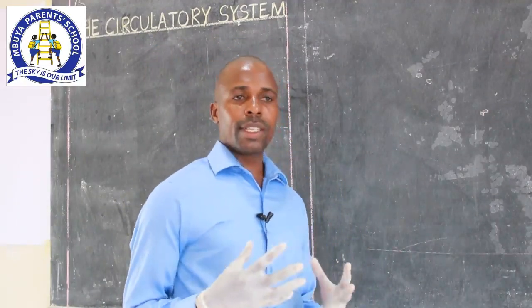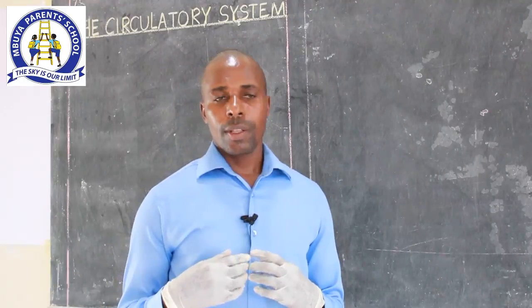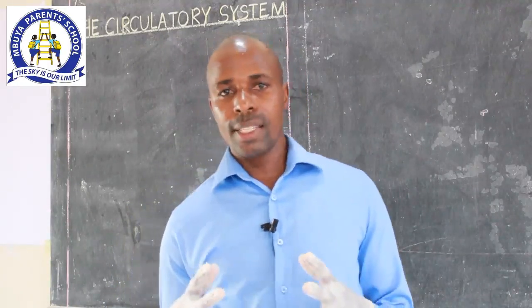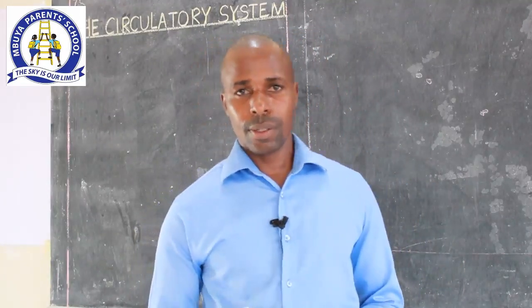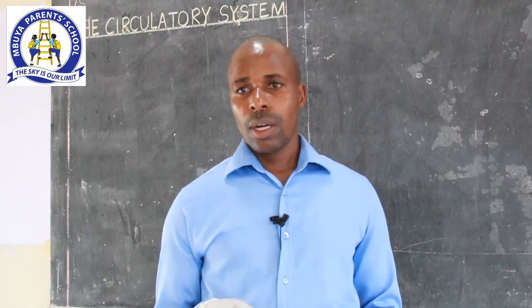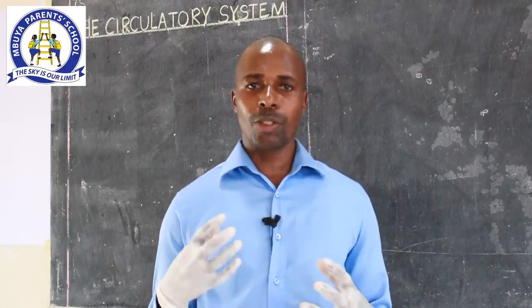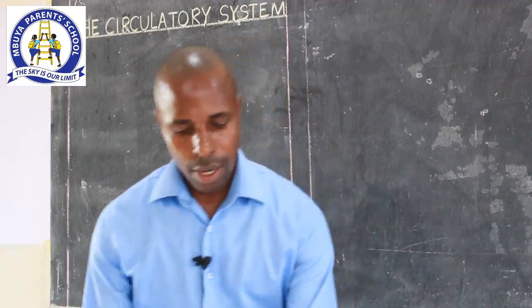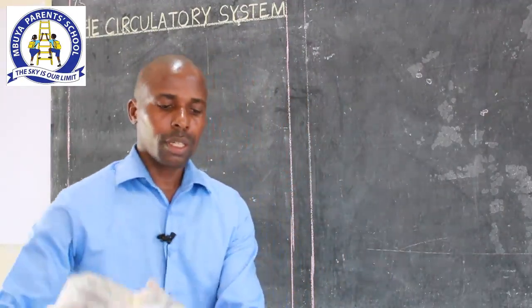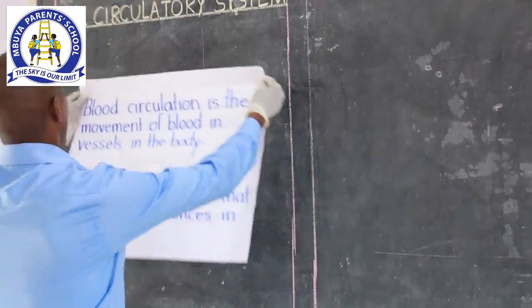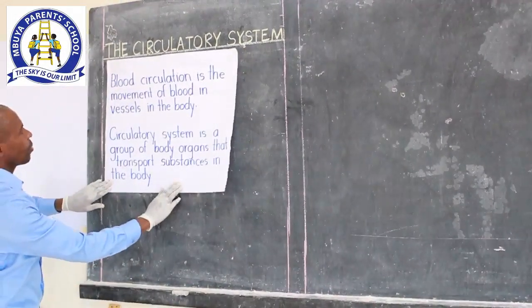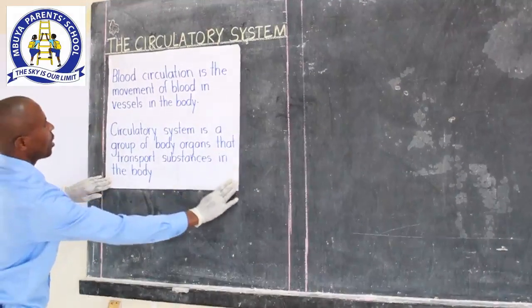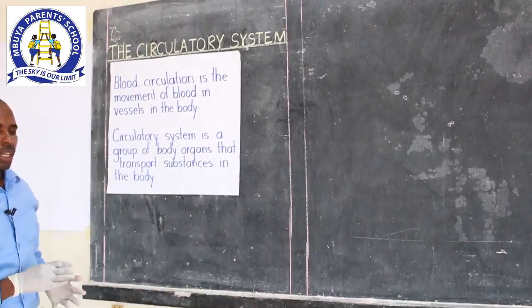The circulatory system is a group of organs in the body that transport different substances. In the circulatory system, we have what we call blood circulation. Blood circulation is the movement of blood in vessels in the body.